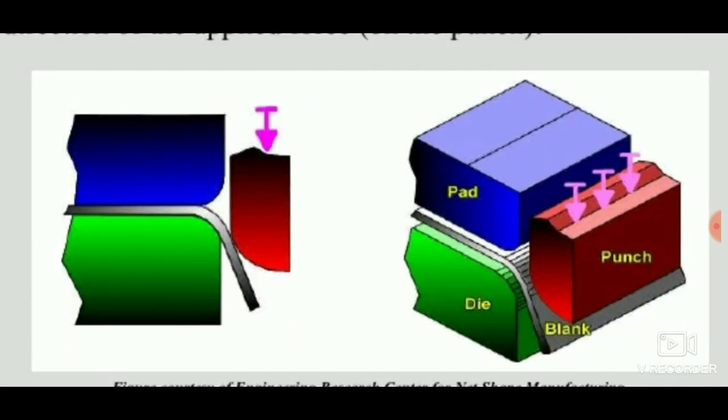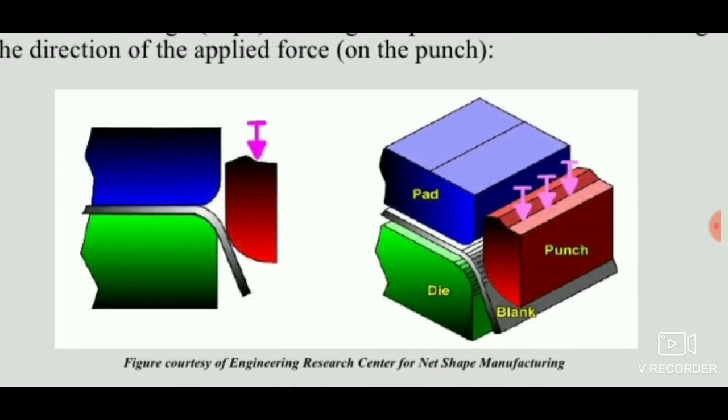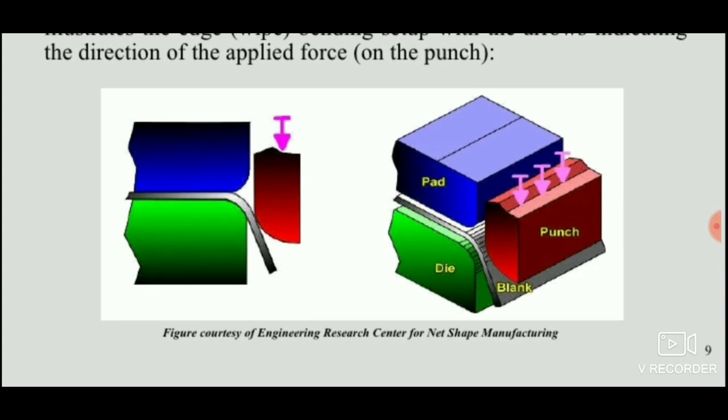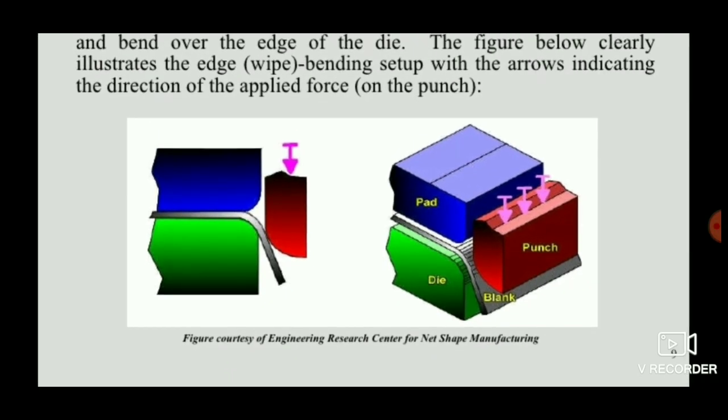Hello viewers, welcome to Engineering Study Materials. Today we are going to discuss edge bending, also known as the wipe bending process. For this process, a punch and a die is used, and a pad is used to hold the sheet metal to remove the distortion effect.